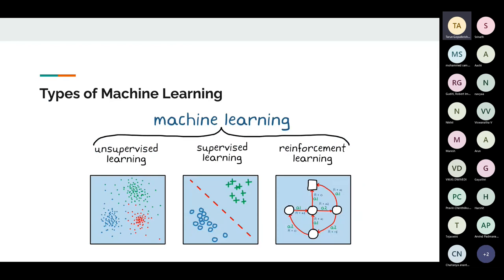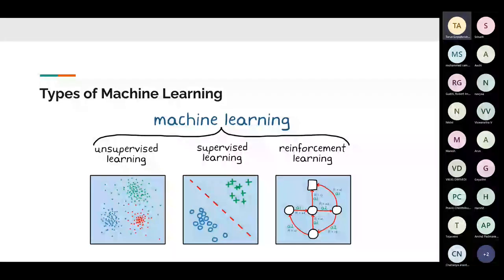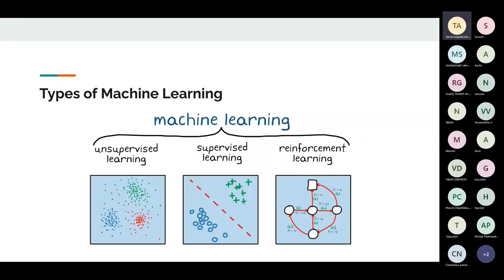Supervised learning: like in image identification, you already have the data and you also have labels for it. For identifying cats and dogs, you give the program images saying 'this is a cat' and 'this is a dog,' feeding a million examples, hoping the program picks up on a general pattern across these images. That is supervised learning — you have data and you have labels.